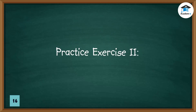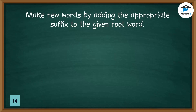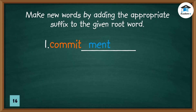Practice exercise two. Make new words by adding the appropriate suffix to the given root word. One: 'commit' + blank — answer: commitment. Two: 'Marx' + blank — answer: Marxism.